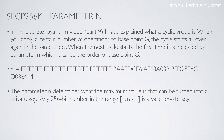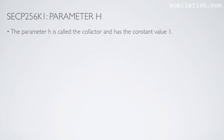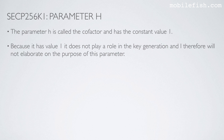The parameter N determines the maximum value that can be turned into a private key. Any 256-bit number in the range 1 to N minus 1 is a valid private key. The parameter H is called the co-factor and has the constant value 1. Because it has value 1, it does not play a role in key generation.